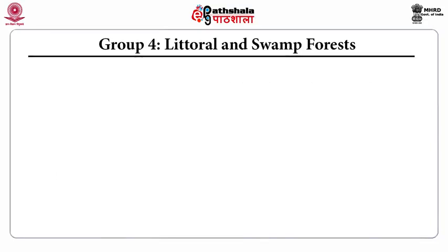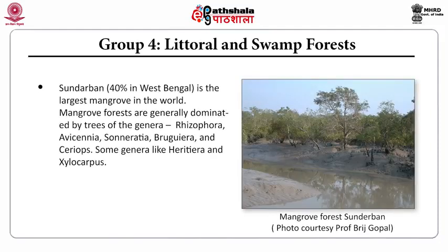Continuing with Group 4, littoral and swamp forest: they occur in the Sundarbans, which covers 40% of the area in West Bengal and is the largest mangrove in the world. These mangrove forests are generally dominated by trees of genera Rhizophora, Avicennia, Sonneratia, Bruguiera, Ceriops, and genera like Heritiera and Xylocarpus.